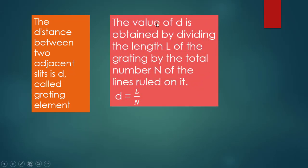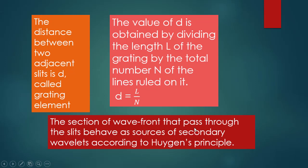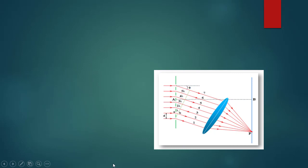The value of D is obtained by dividing the total length of the grating by the total number of lines ruled on it. The grating element is the distance between two adjacent slits. The section of the wavefront that passes through the slits behaves as the source of secondary wavelets according to Huygens' principle.